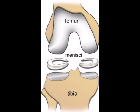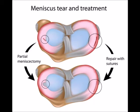Arthroscopic surgery for meniscus tears is the most common procedure done in orthopedic surgery. The medial and lateral meniscus are semilunar cartilage structures that are found between the femur and the tibia bones. You can see these two semilunar structures on the diagram above. The surgical treatment of meniscus tears is done in one of two ways: either the meniscus fragments are trimmed, or the meniscus tear is sutured.